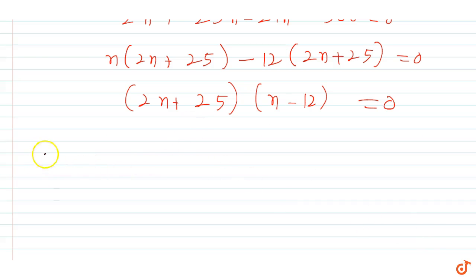So either 2n + 25 = 0 or n - 12 = 0. This gives n = -25/2 or n = 12.